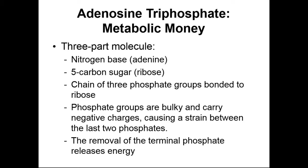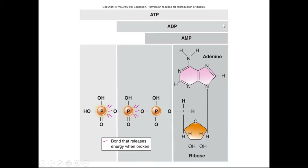ATP really wants to get rid of that terminal phosphate group, so when it does, it's a very energetically favorable reaction and a lot of energy is released. AMP — adenosine monophosphate — has just one phosphate group. Adding the second phosphate group makes it adenosine diphosphate, ADP. Adding the third phosphate group makes it ATP, adenosine triphosphate. The chemical bond between the third and second phosphates is the highest energy bond. The bond between the second and first phosphates has less energy but is still fairly high energy. AMP is a low-energy molecule, ADP is slightly higher energy, and ATP is a very high-energy molecule.